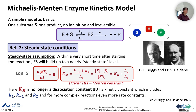With this steady-state assumption, the change in the ES complex concentration over time is equal to zero. We then work with Km, the Michaelis-Menten constant, which includes the dissociation constant plus K2 divided by K1. This is the Michaelis-Menten constant based on the steady-state assumption explained by Briggs and Haldane in 1925.